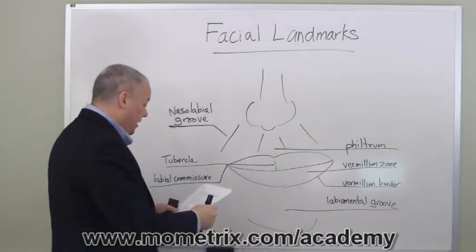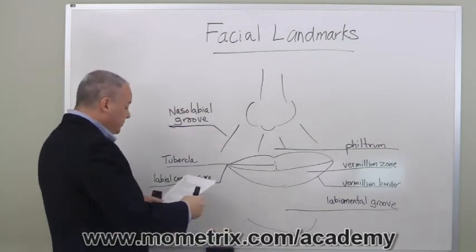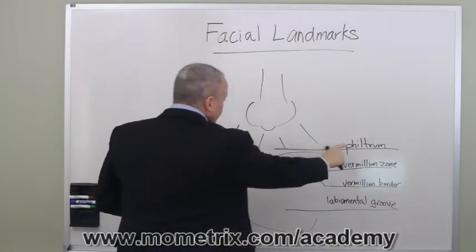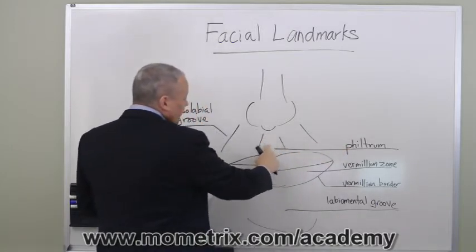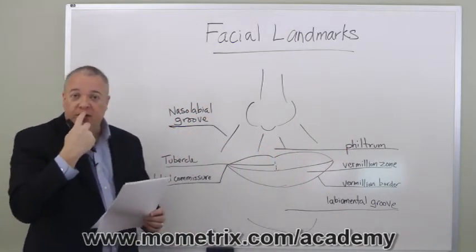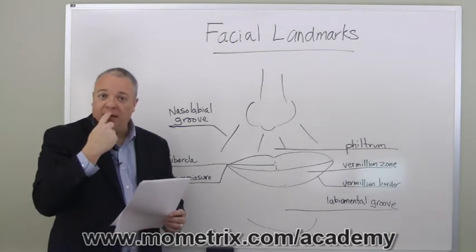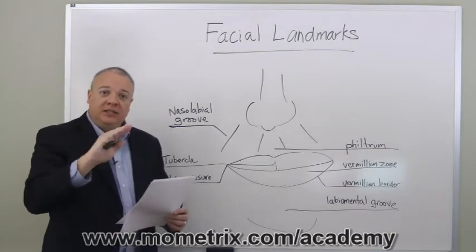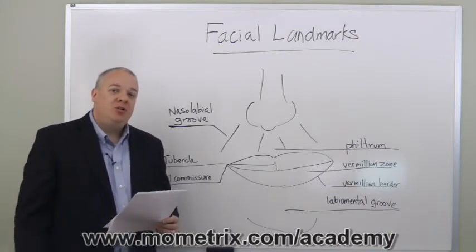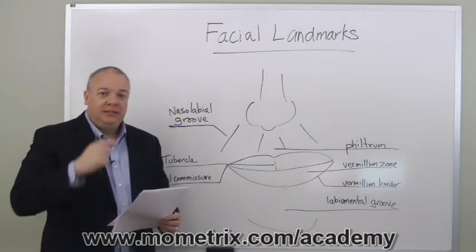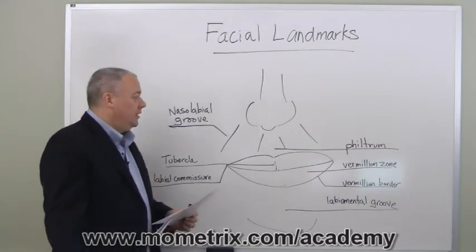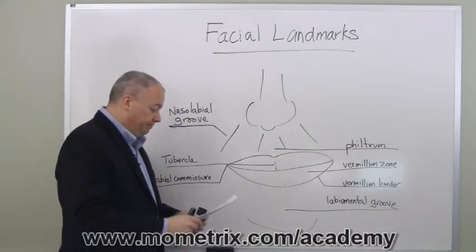The second landmark we want to talk about is called the philtrum. The philtrum is the indentation found just underneath your nose and above your mouth. There's a little scooped-out area there on most people, from the base of the nose to the top of the lips — it's called the philtrum.